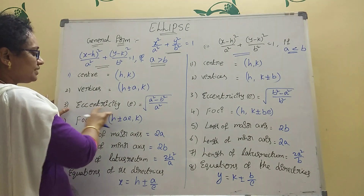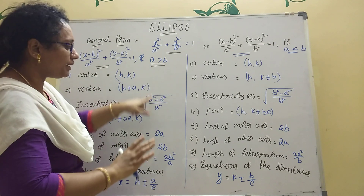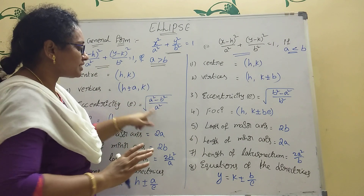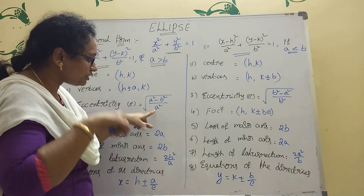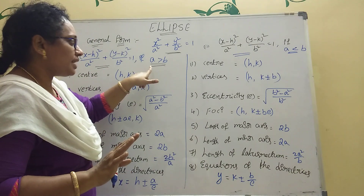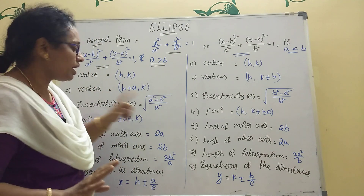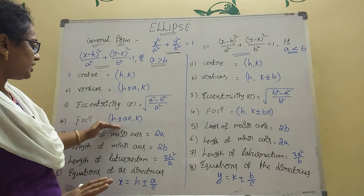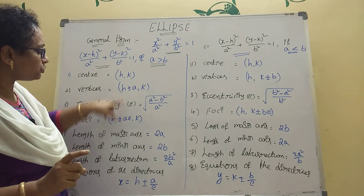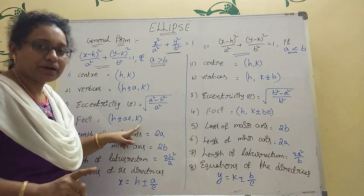Next, eccentricity e. If a is greater than b, the formula is e = √(a² - b²) / a. You start with a and end with a in the denominator. Next, foci: if a is greater than b, the foci are (h ± ae, k).